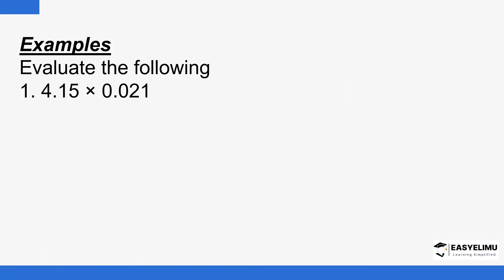So let's look at our first example. We add the decimal places: here there are two decimal places, and here there are three decimal places, giving us five decimal places in total. So the product is going to have five decimal places — if that's not the case, something has gone wrong. That is already the number of decimal places in the product that I know. The next thing is disregarding the decimal point, so the number becomes 415.